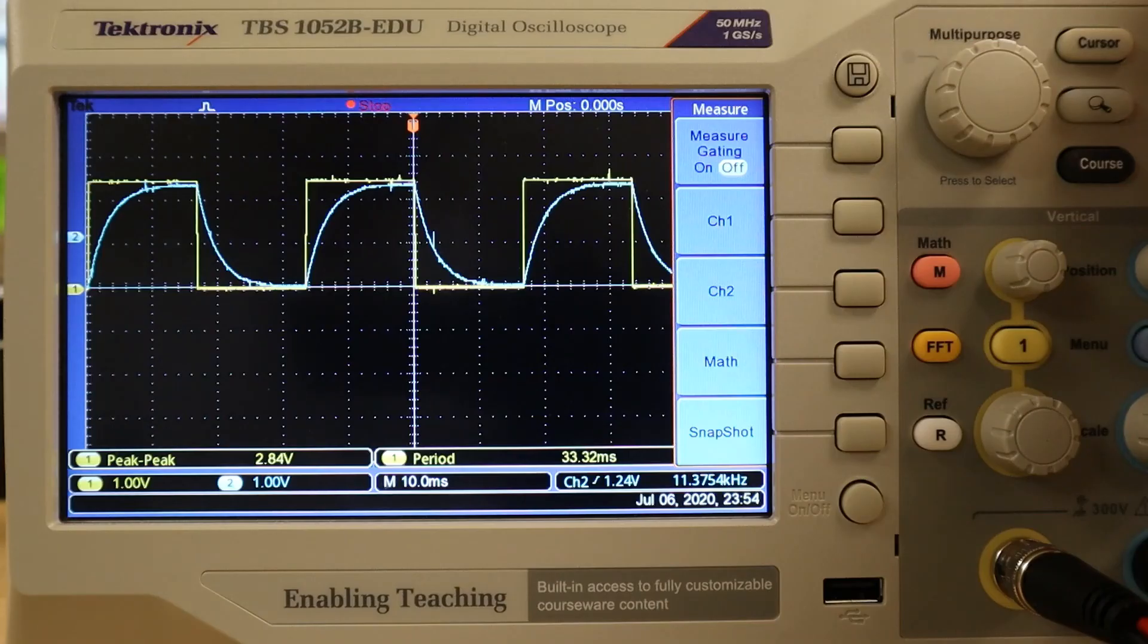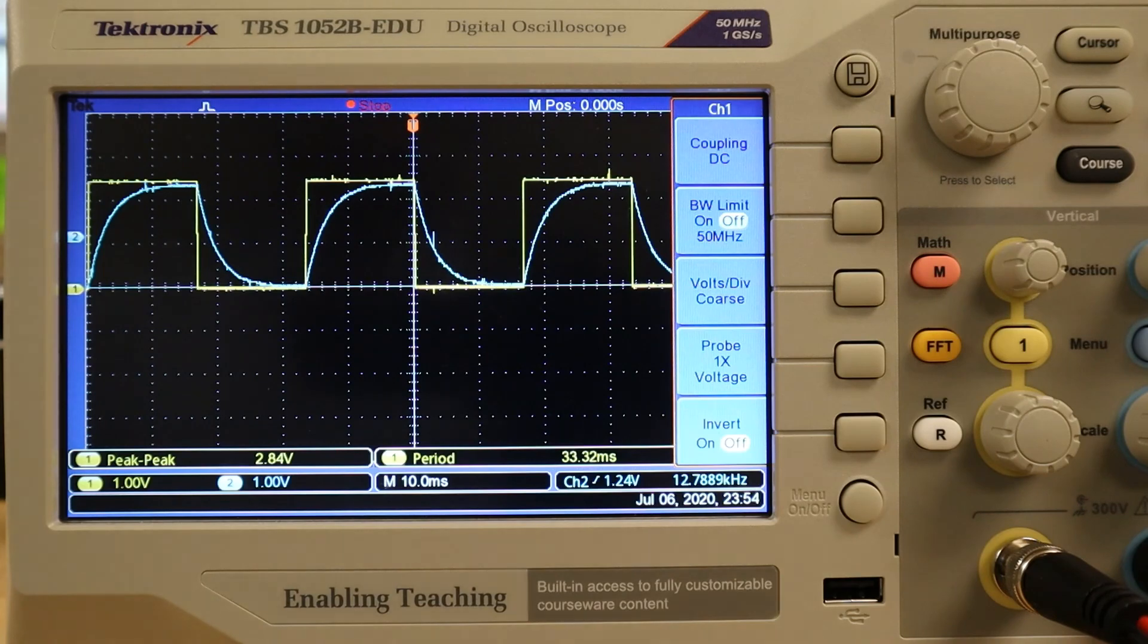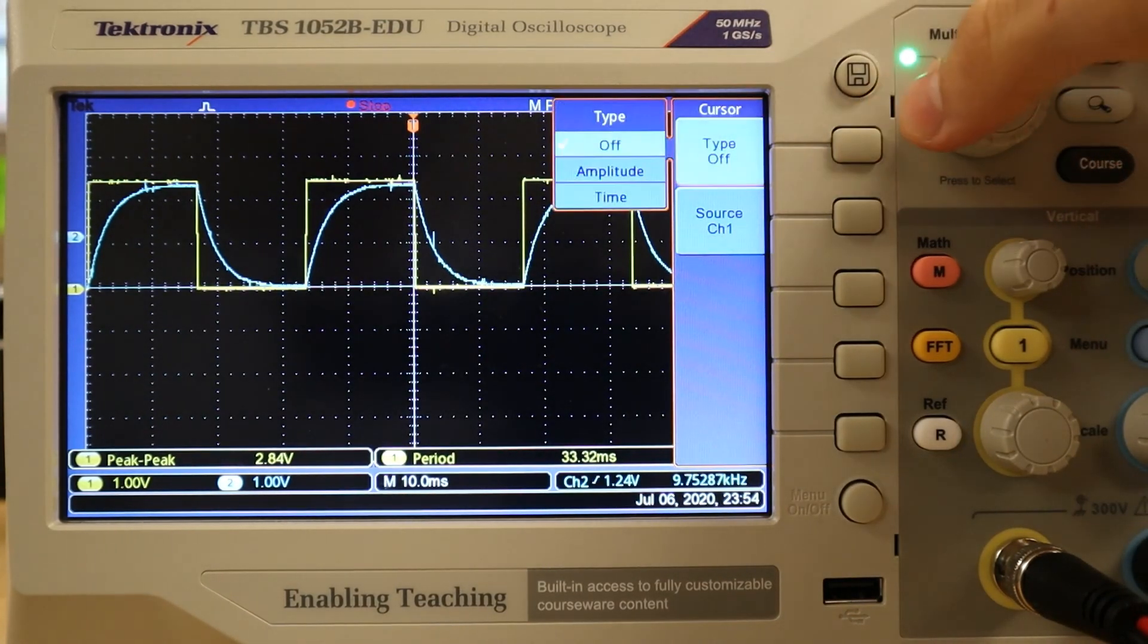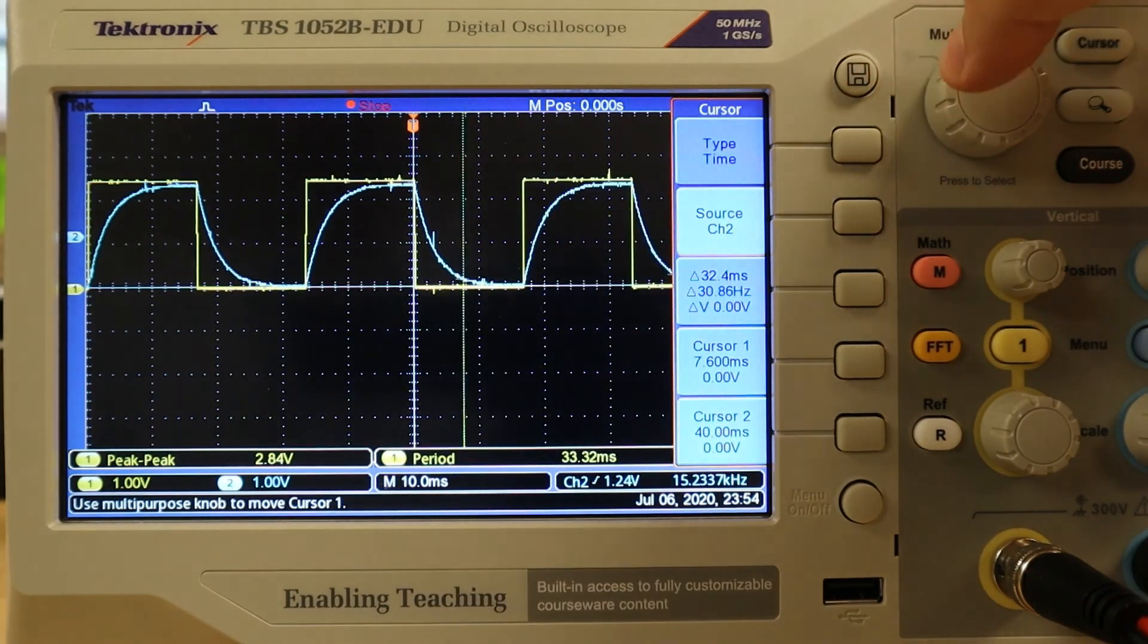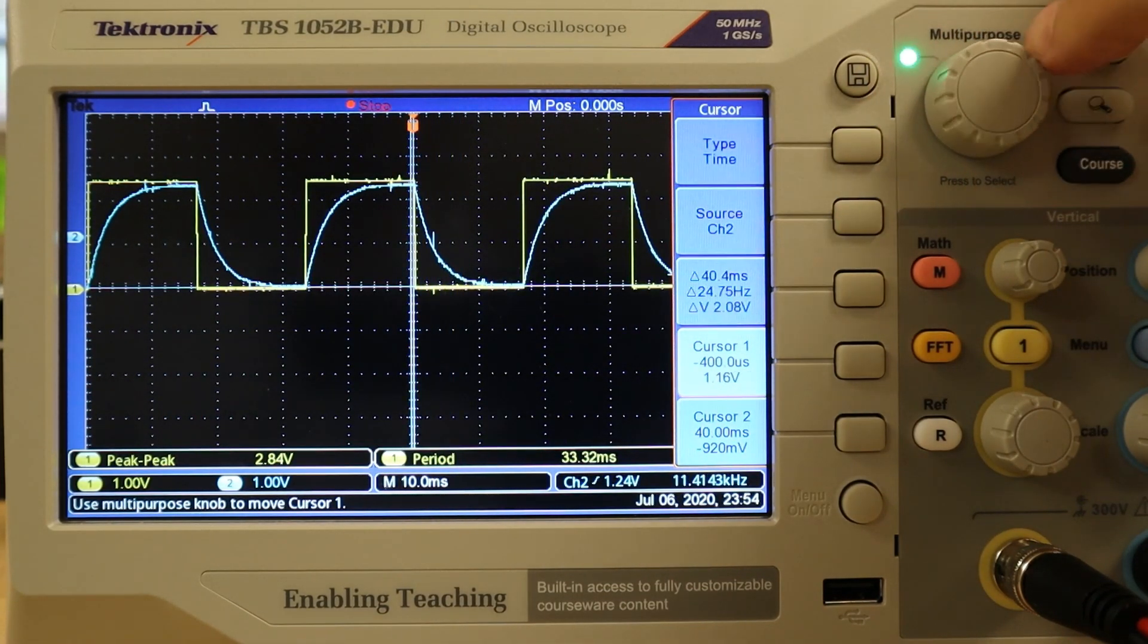We can then use the cursor utility to make some pertinent measures of these functions, including the 63 percent charging voltage, which will allow us to determine an experimental time constant for this circuit.